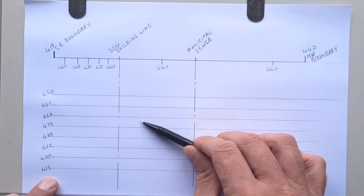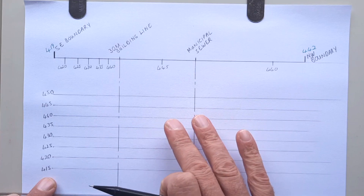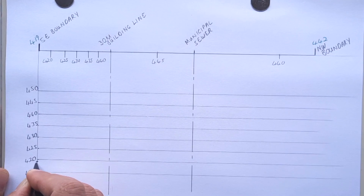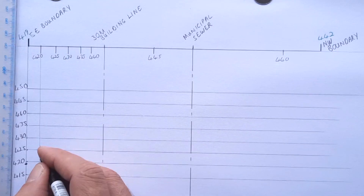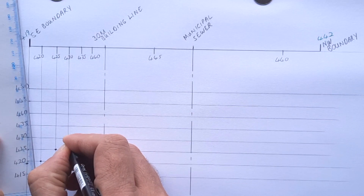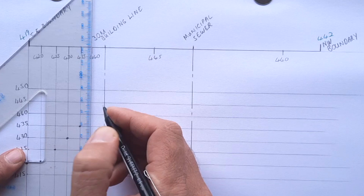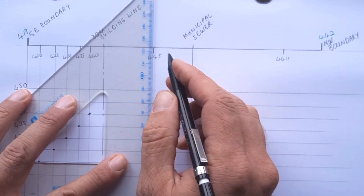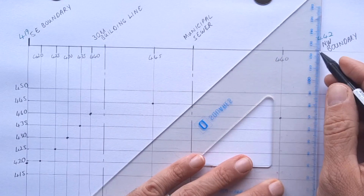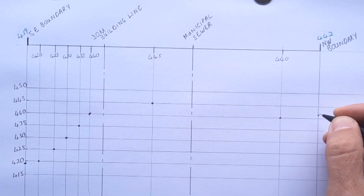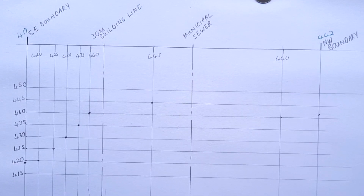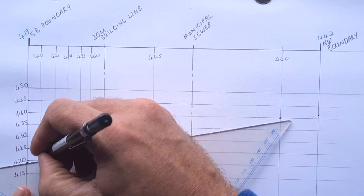By connecting all of these points using my vertical scale for the contours, I get a very clear indication of what that elevation looks like — that's the purpose of this exercise. Starting at 419, plotting 420, then 425, and continuing to plot the actual elevation. Once you've done this, you take your ruler and join all of these points together.